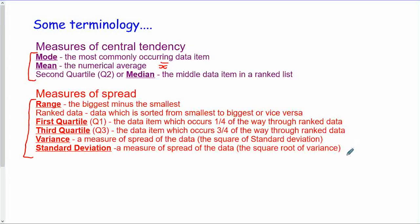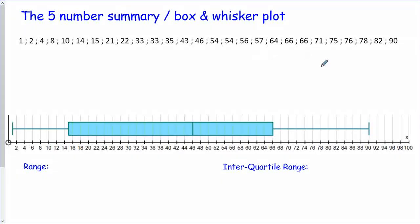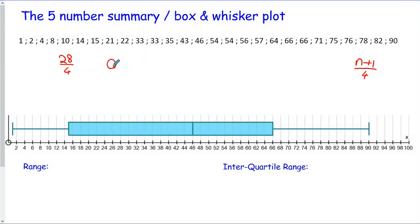Let's remind ourselves about the five-number summary. We take the number of terms, add one, and divide by four — that gives us the positions of our quartiles. For example, with 27 numbers: 27 plus 1 gives 28, divided by 4, means the first quartile will be in the seventh position. The median or Q2 will be in the 14th position — double the 7 — and the third quartile will be in the 21st position — 7 multiplied by 3.